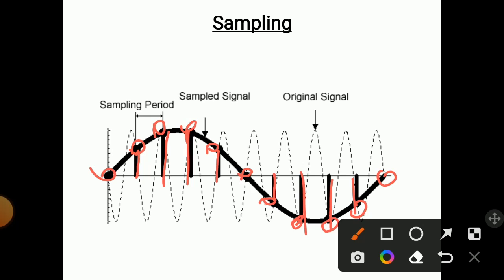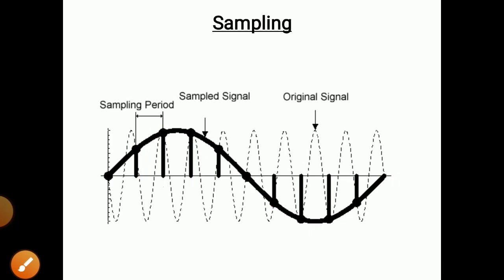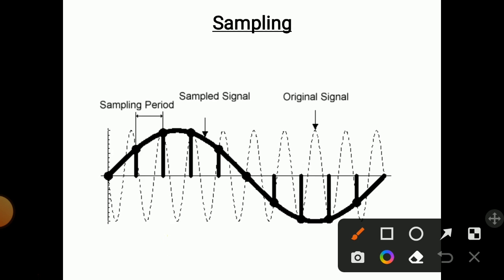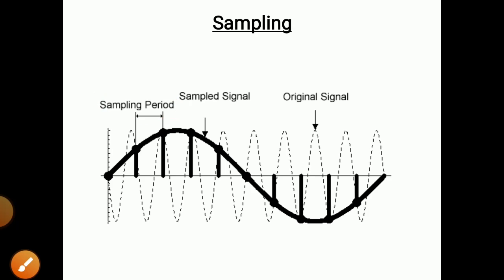The sampled signal is an approximate representation of the original signal — it is not exact, but it is an approximate representation. The period between which we are taking samples is called the sampling period. The time for which we are taking samples is called the sampling period. So like this, sampling is done.